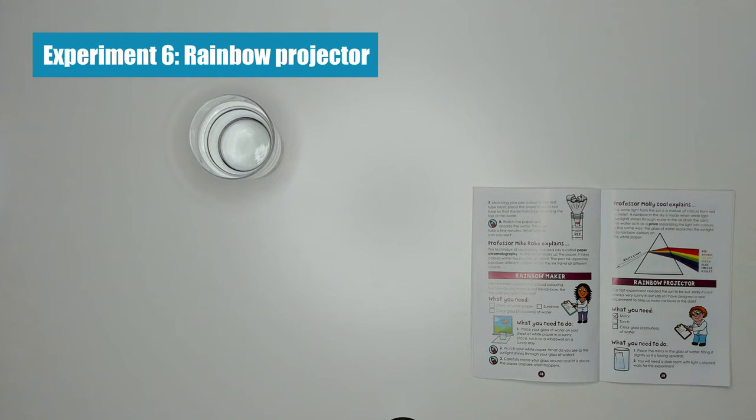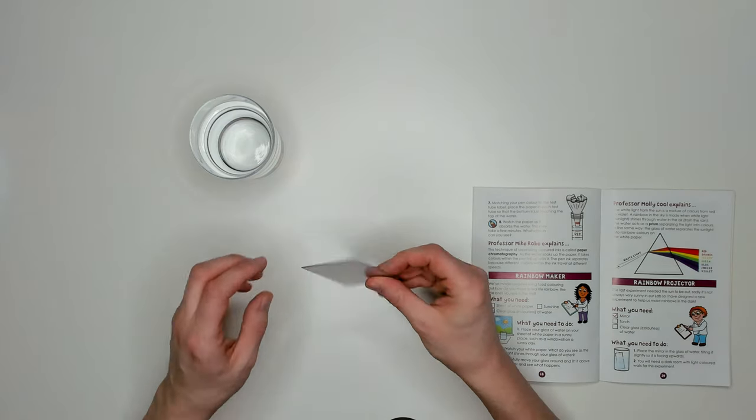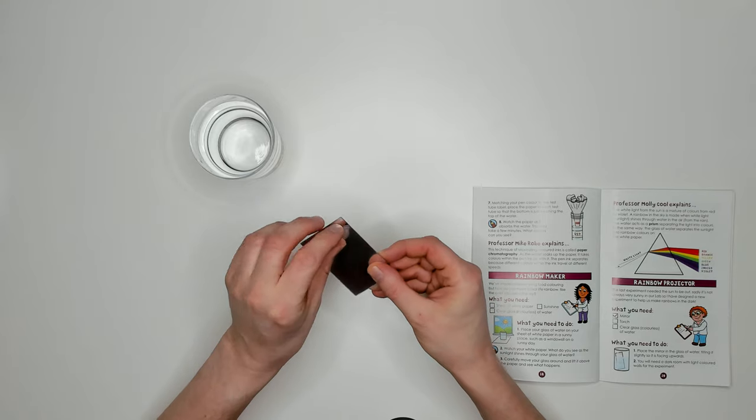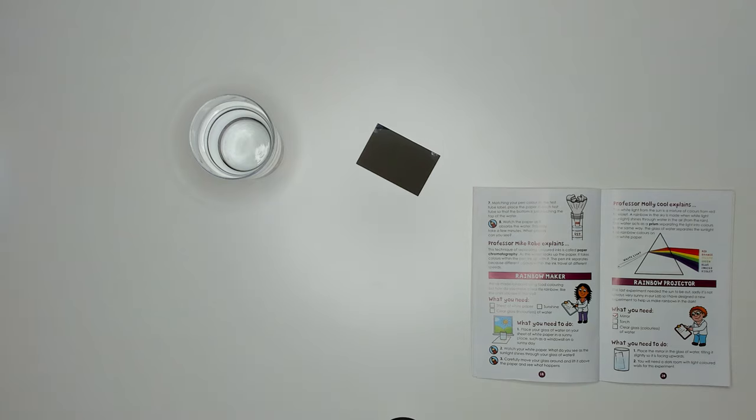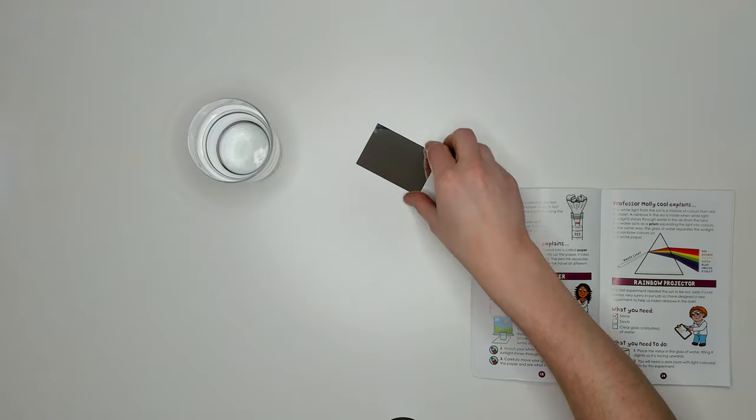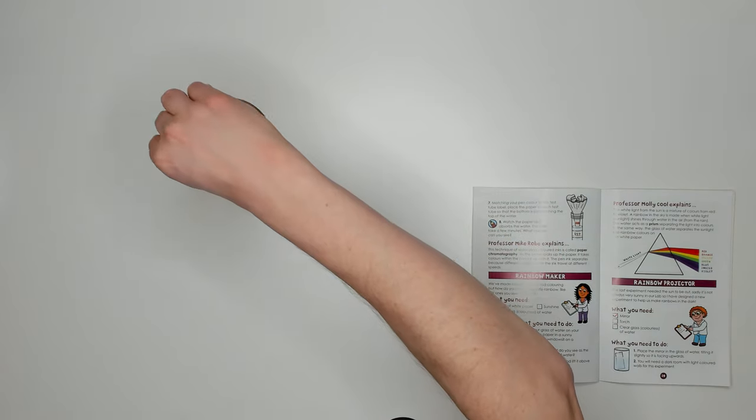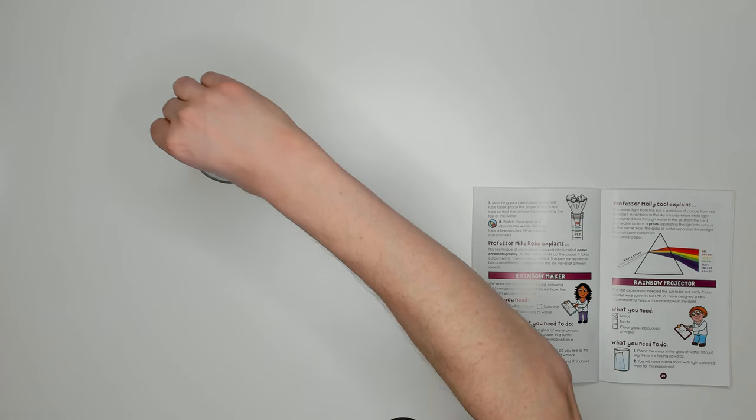Our penultimate experiment today is called Rainbow Projector. First of all we need to remove the nice protective film from the mirror. We also need a glass of water and a torch. I'm going to use the torch on my phone. The instructions tell me to place the mirror in the glass and then shine the torch onto the mirror.